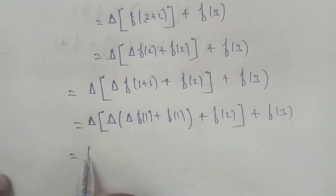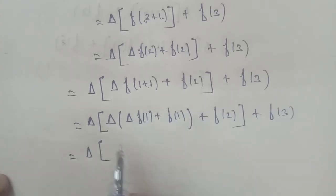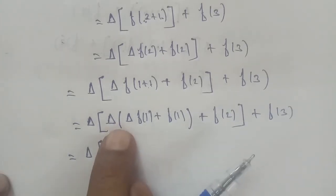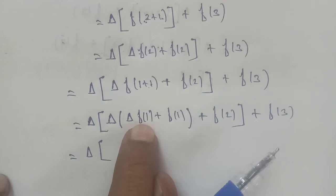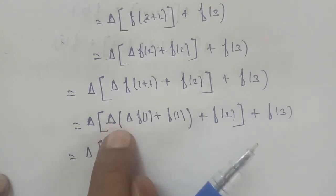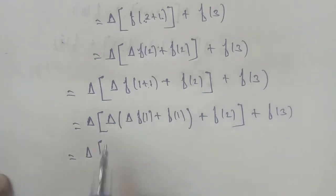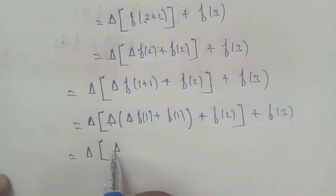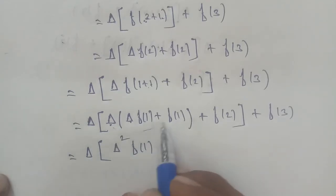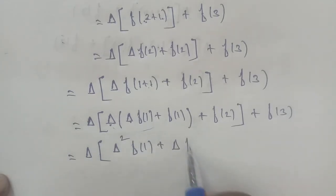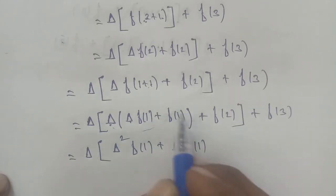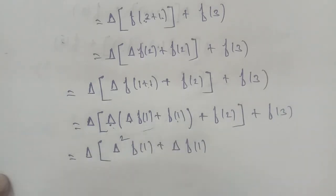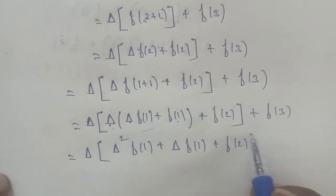In the delta, with 2 terms multiplied, delta times delta equals Δ². So Δ² into f(1) plus delta into f(1). Multiply by 1, close bracket.